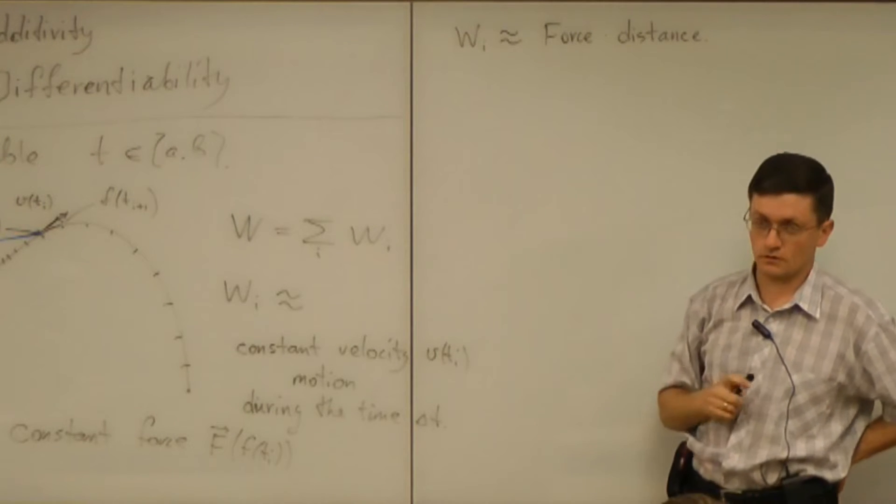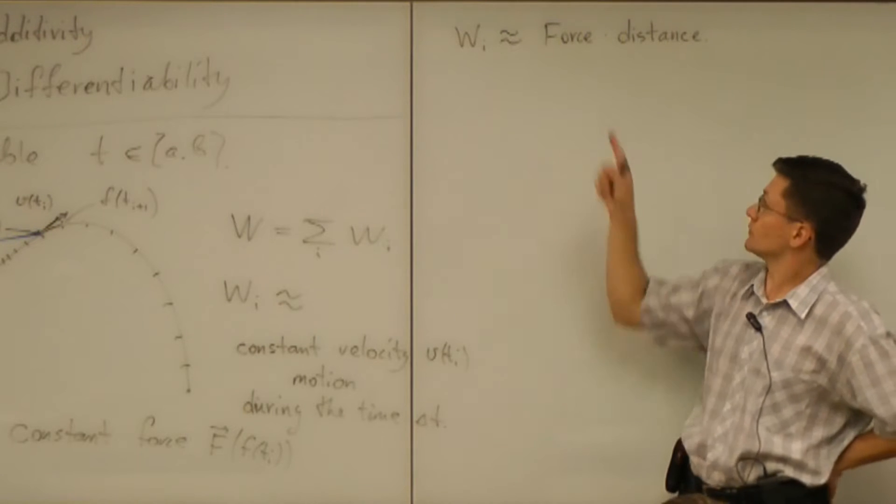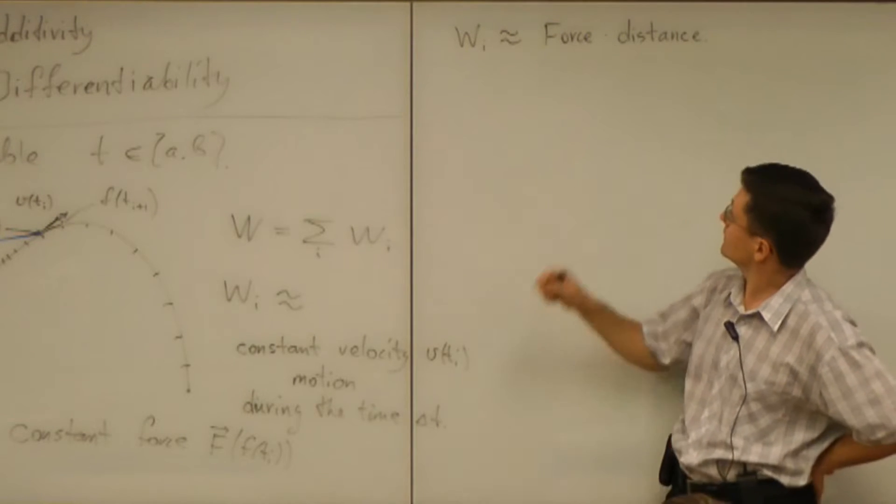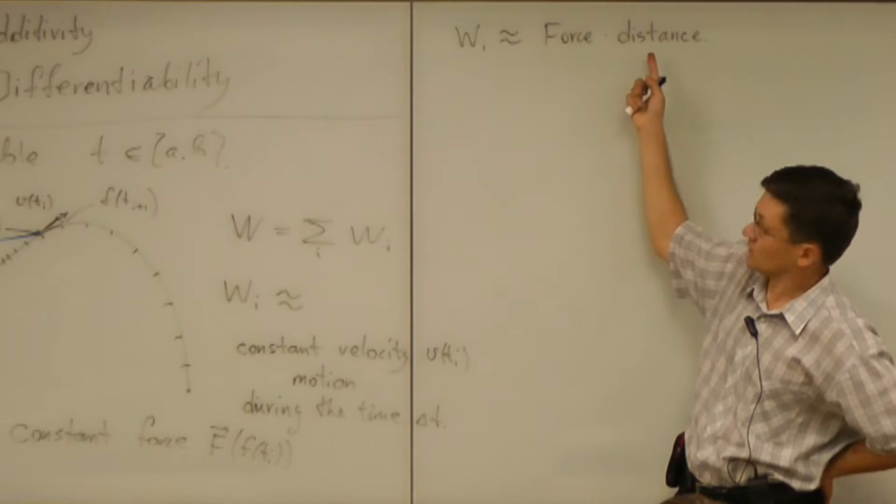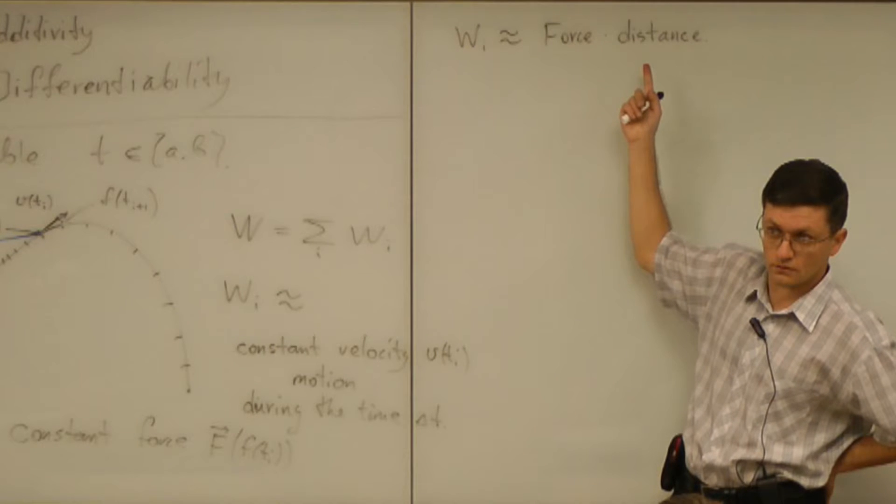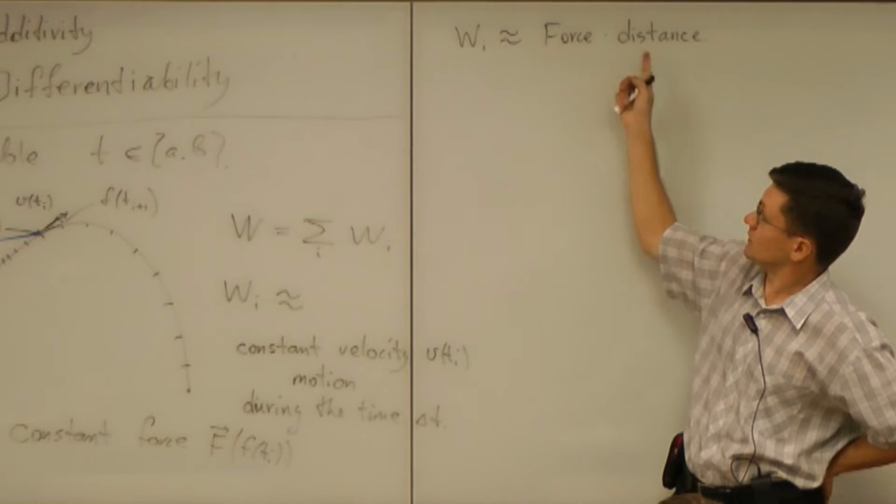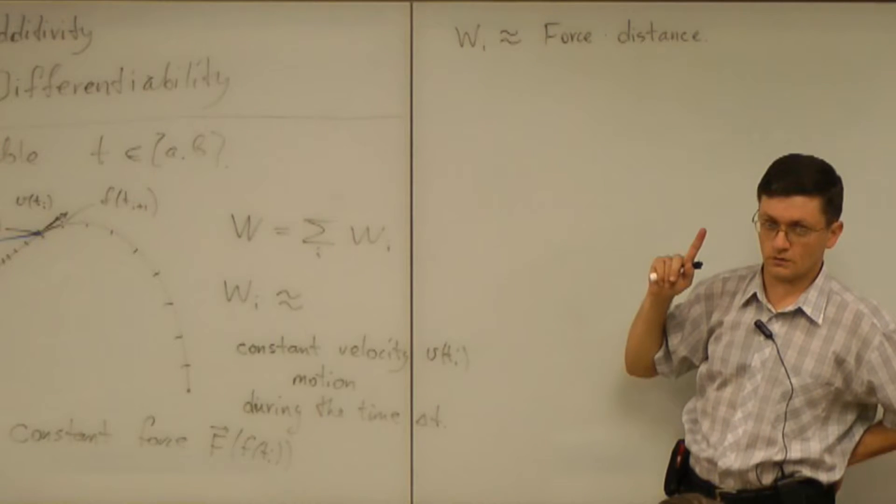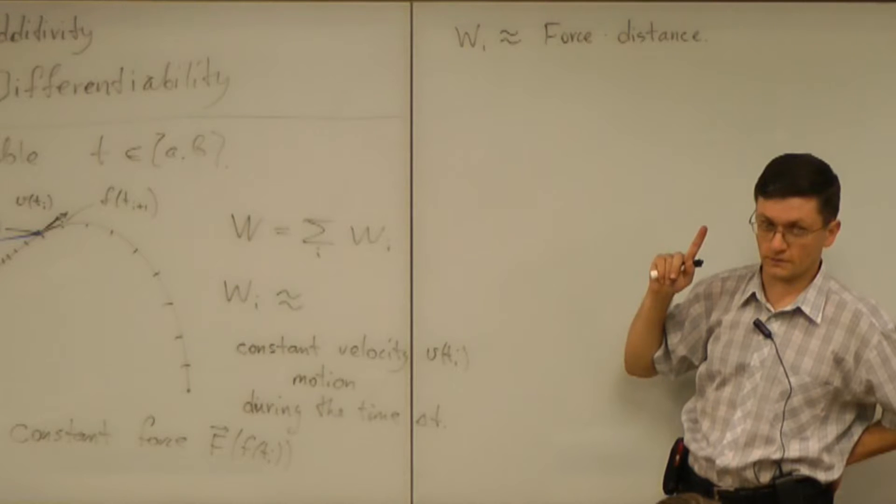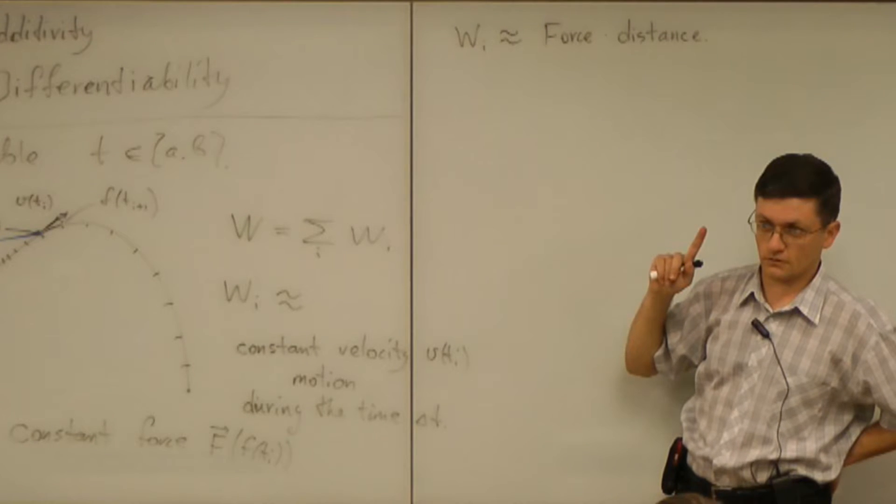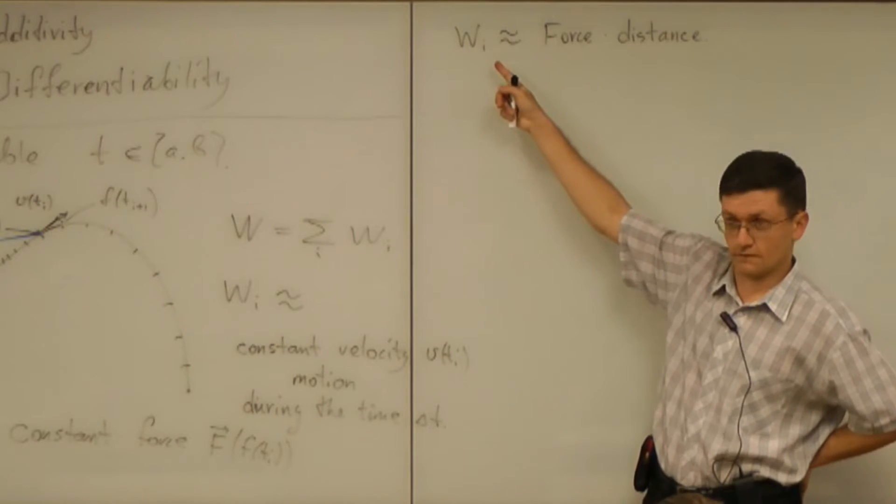Now what does that law mean? Because force is a vector. Distance, is that a number? And if so, how do we multiply a vector by a number? Do we get a vector? And if so, is work a vector?